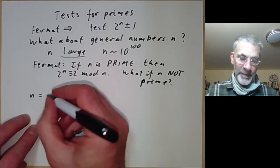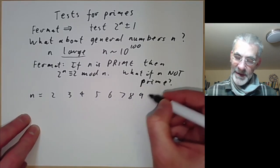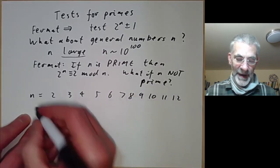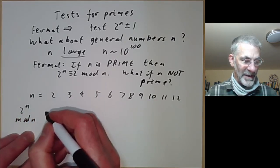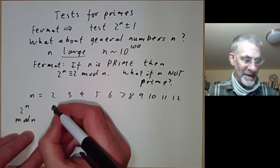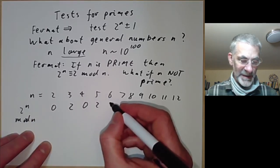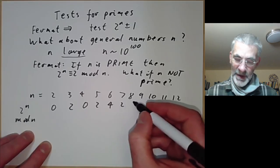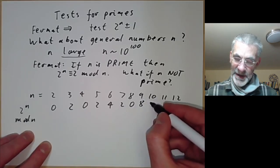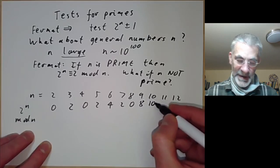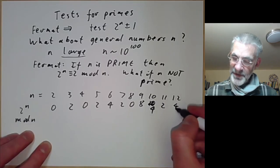Well, let's take a look. So let's take n to be 2, 3, 4, 5, 6, 7, 8, 9, 10, 11, 12, 13. And work out what is 2 to the n mod n. So for 2 we get 0, here we get 2, 0, 2, 4, 2, 0, 8, 4, 2, 4, 2.